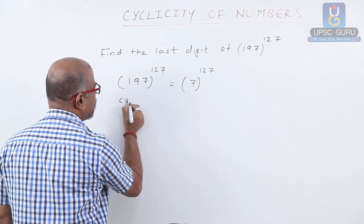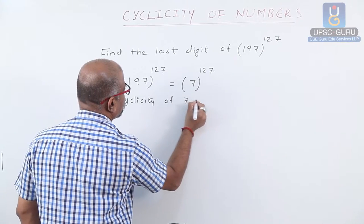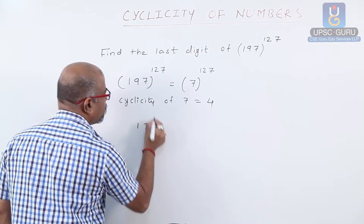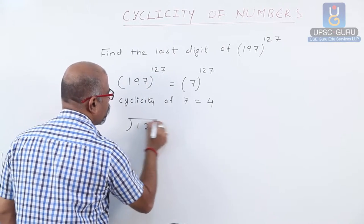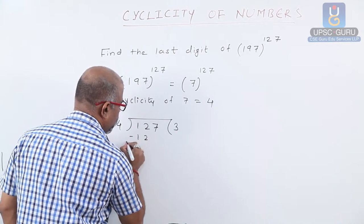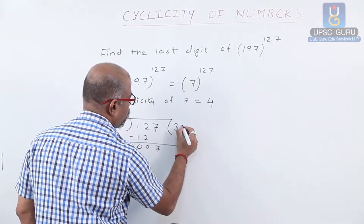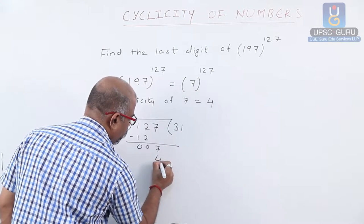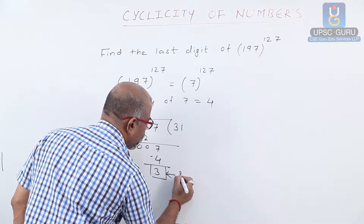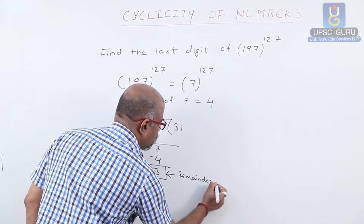We know that the cyclicity of 7 equals 4. Therefore, divide this power 127 by 4. We get 4 times 31 is 124, remainder is 3. We get remainder equals to 3.